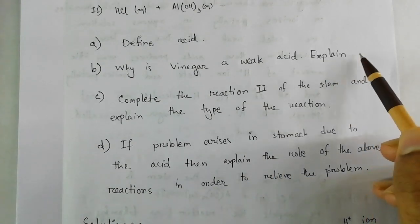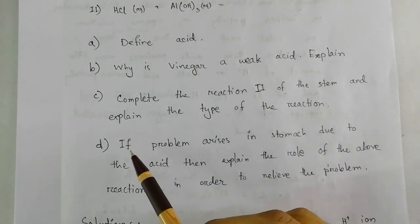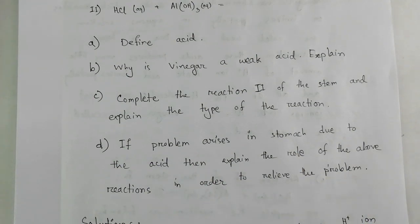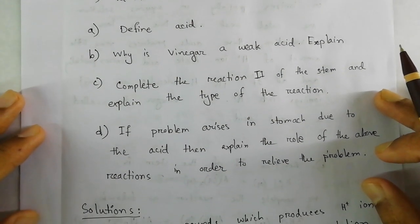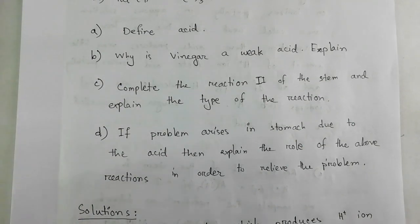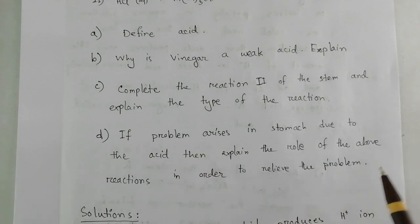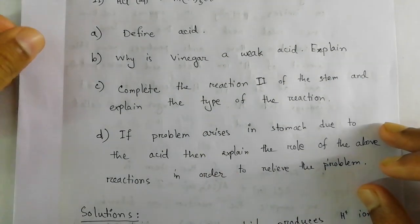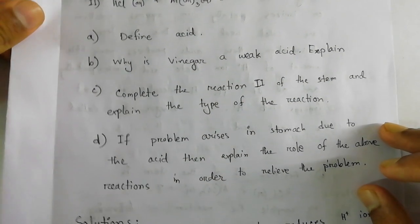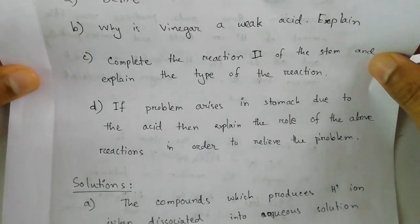The sub-questions are: (a) define acid; (b) why is vinegar a weak acid; (c) complete reaction 2 of the stem and explain the type of reaction; and (d) if a problem arises in the stomach due to the acid mentioned in the stem, explain the role of the above reactions to relieve the pain.